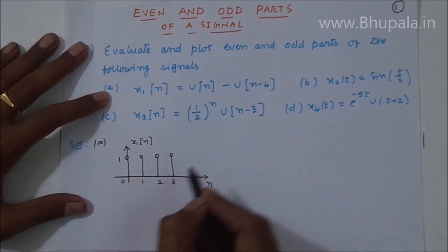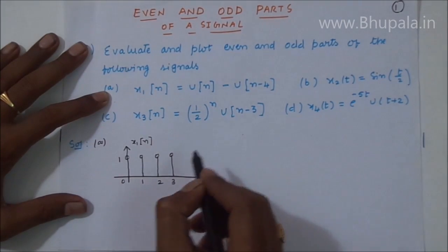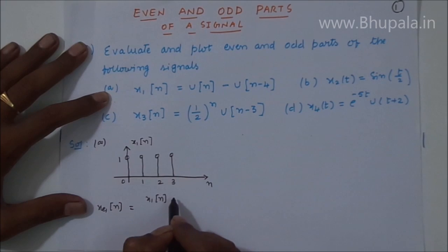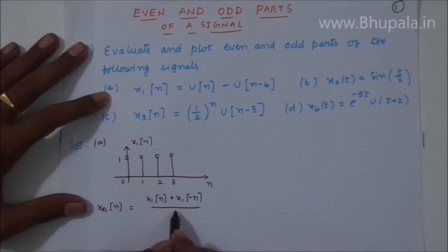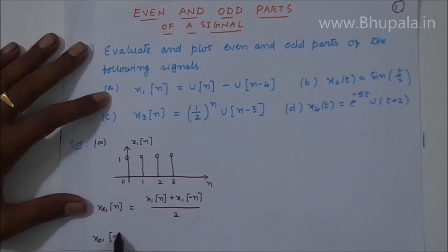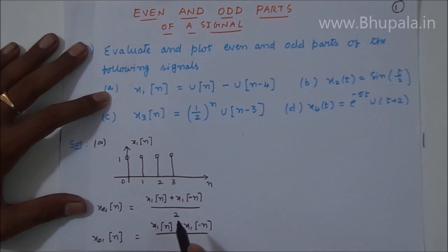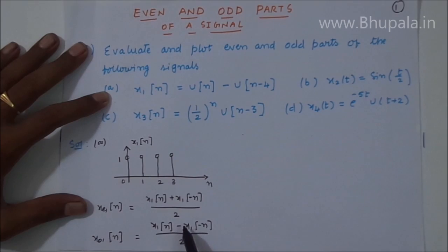The even part of the signal is evaluated using the formula we've already seen. The even part xe1[n] equals (x1[n] + x1[-n]) / 2, and similarly the odd part xo1[n] equals (x1[n] - x1[-n]) / 2. To evaluate these two signals, we require x1[-n].